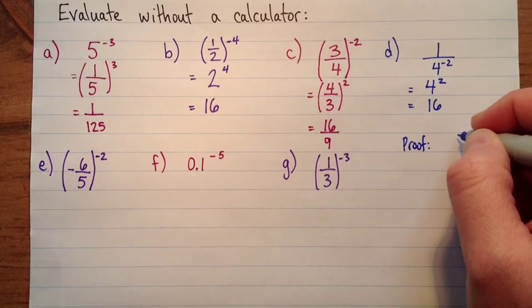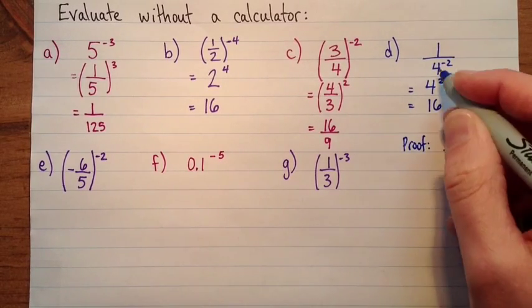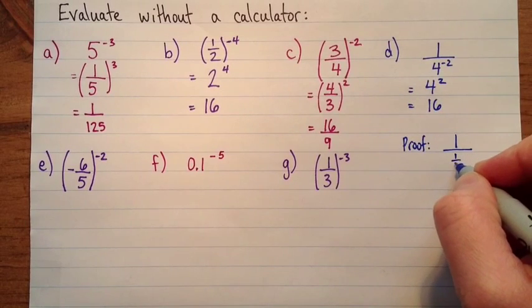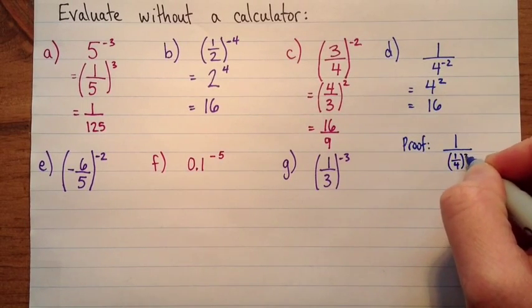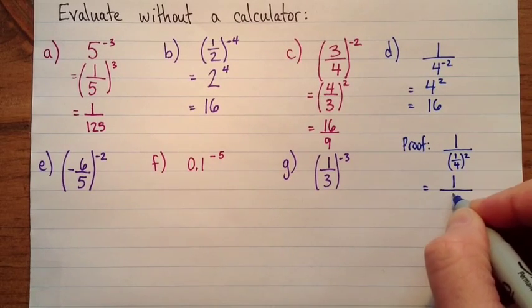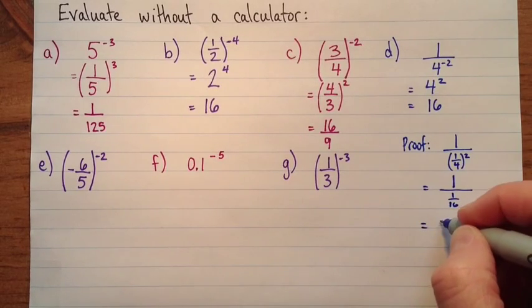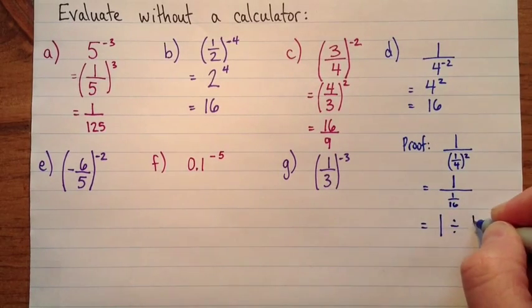So here's a longer way of doing it. This is equal to 1 over, and if I take the reciprocal of the base here, I've got 1 fourth squared, which is equal to 1 over 1 sixteenth. And another way of writing that is 1 divided by 1 sixteenth.